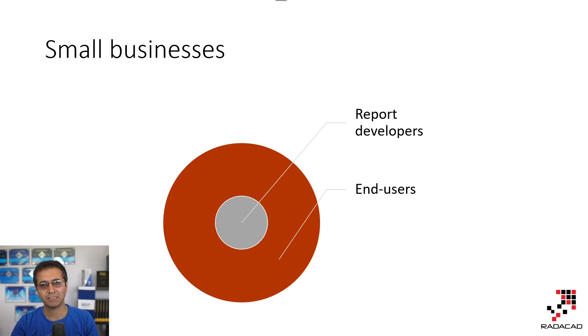Now you might say, well in my organization the layers are not these four layers that you mentioned Reza, for me it's like different, which is correct. Every organization has a different type of layers. In the small businesses, like a group of let's say 10 people, 15 people, you might have only like one or two report developers, often even only one, and a lot of end users. So it is basically just two layers.